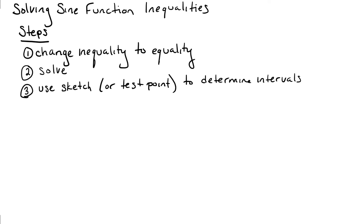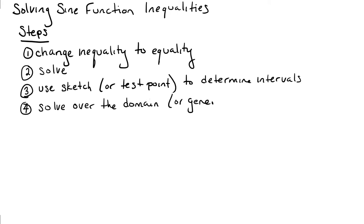And then finally, we're going to have to think about the domain. Just like we had to do when we were solving sine functions, we need to consider the answer given a domain, and if there's no domain given, we need to generalize our answer. So those are our steps, and now that we have our steps, let's take a look at an example. We'll do an example together.